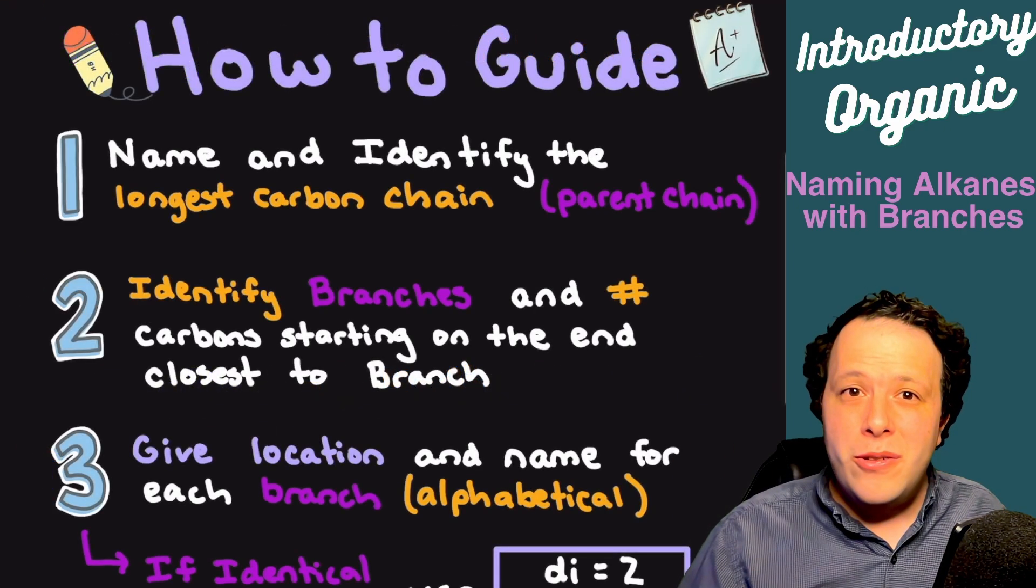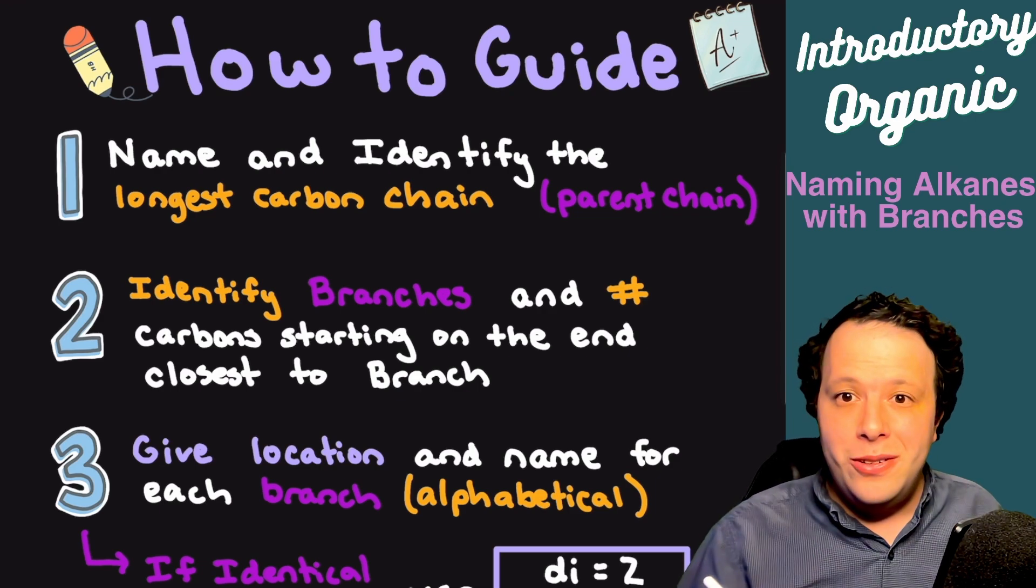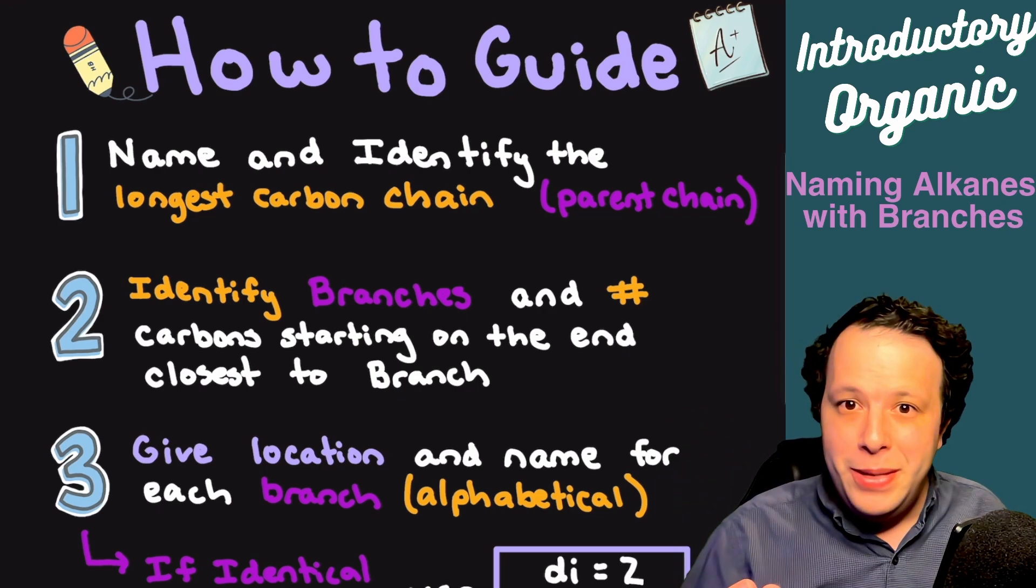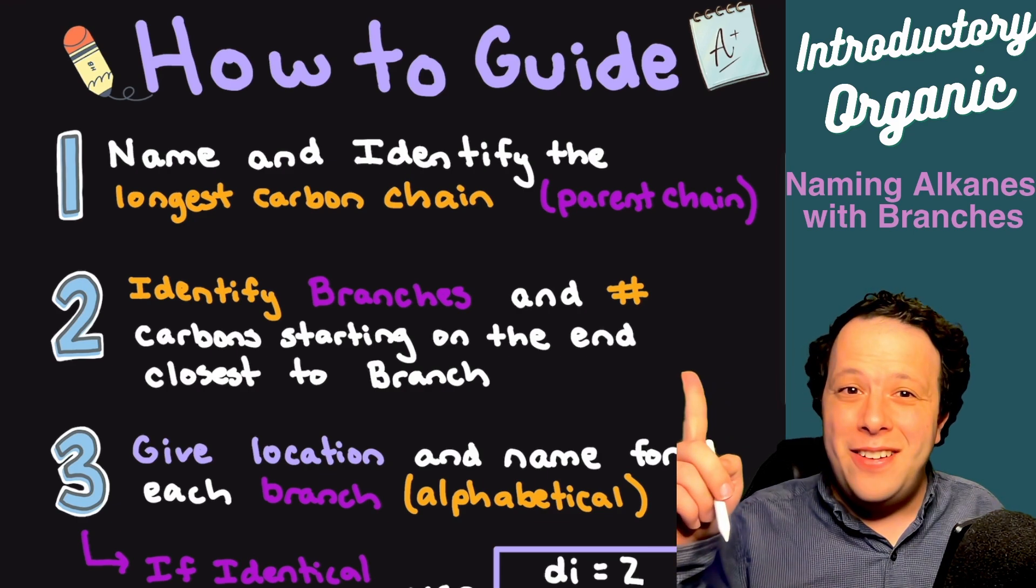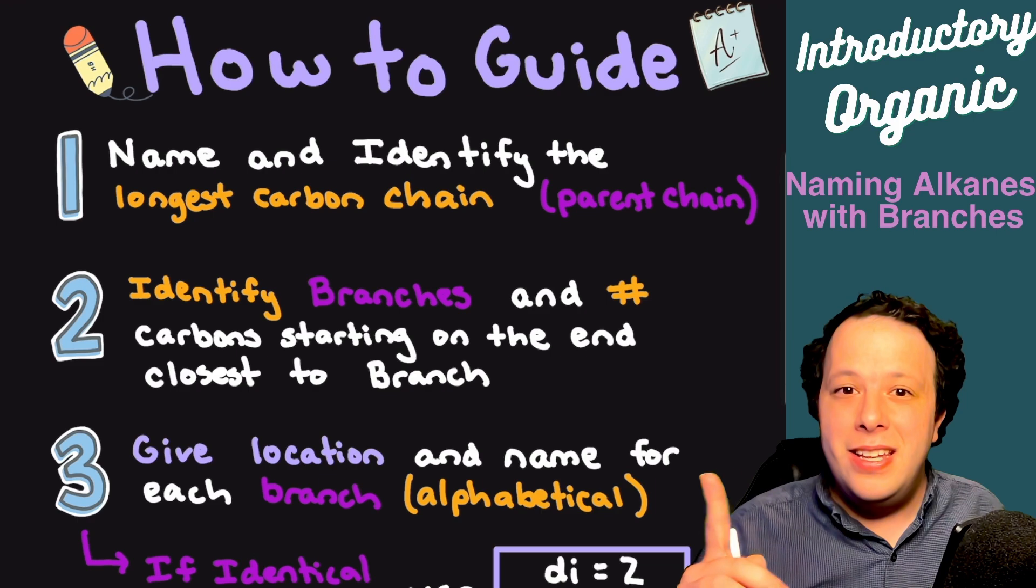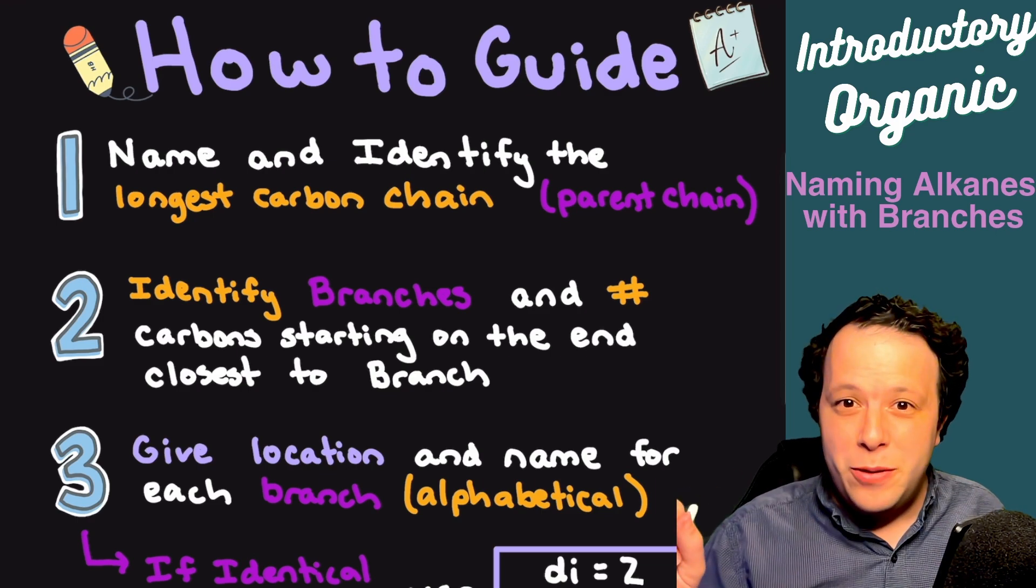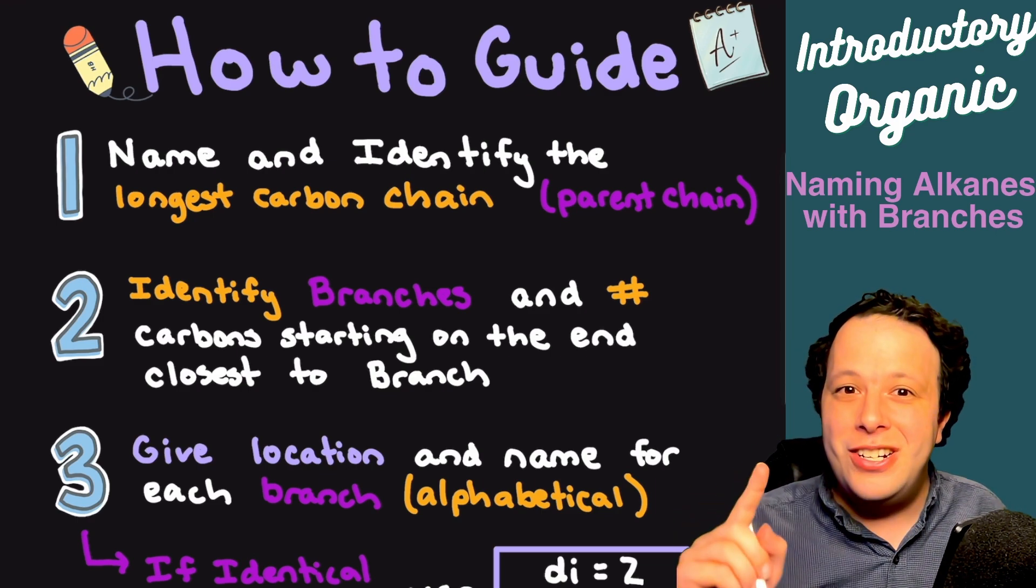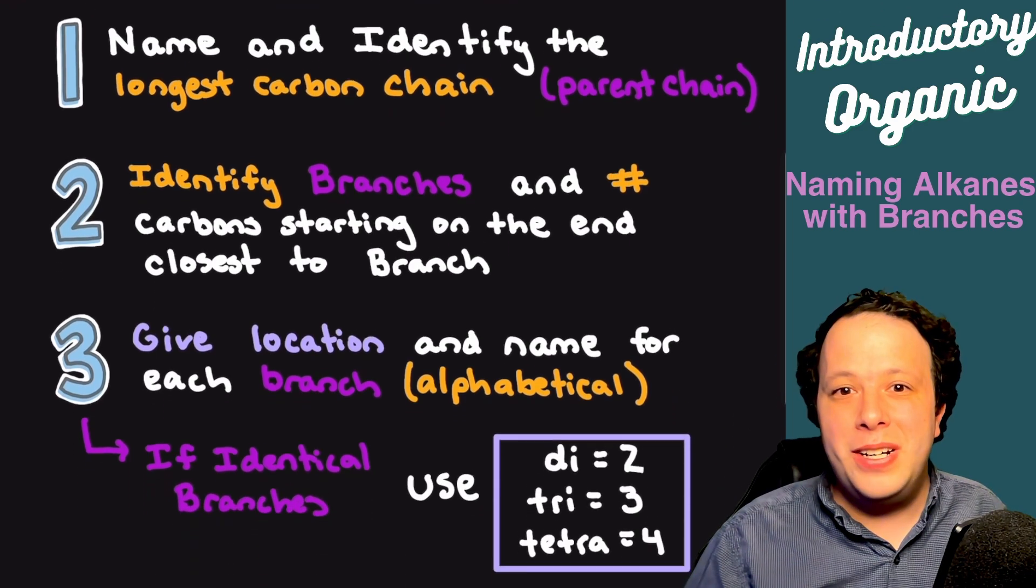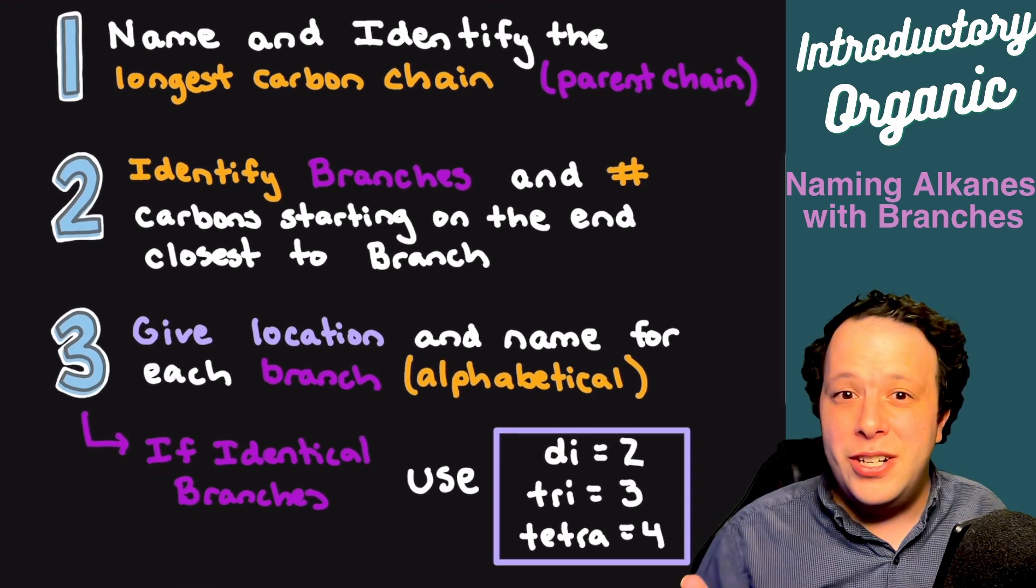So when you're going through these, just remember: find your longest carbon chain, try to count from every end, name it. If you need to put them on flashcards, do that. Then afterwards, you're going to identify and number the branches. And then when you're writing it out, you write out your parent name and then put the location and the name of each branch, put them in alphabetical order. And don't forget about the prefixes. If it's di-, tri-, and tetra-, it just keeps taking practice. So keep trying and you will get better.